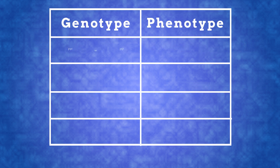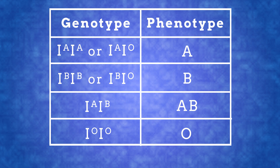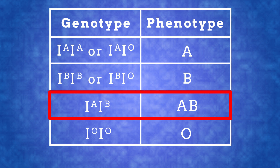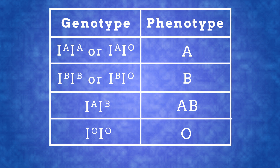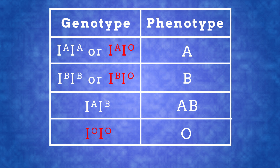These genotypes give these phenotypes. So if you inherit IA from your mother and IB from your father, you will be blood group AB. To be blood group O, both your parents must have at least one IO allele, and your parents could be either of these three genotypes.